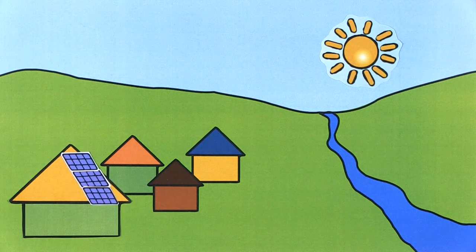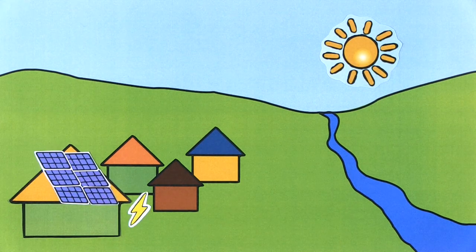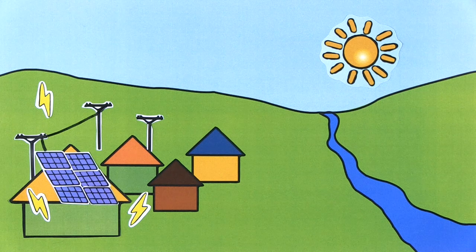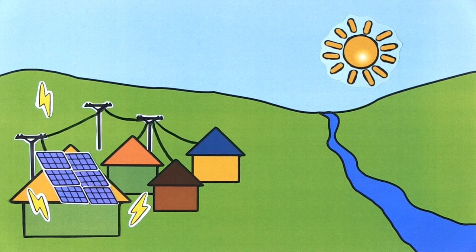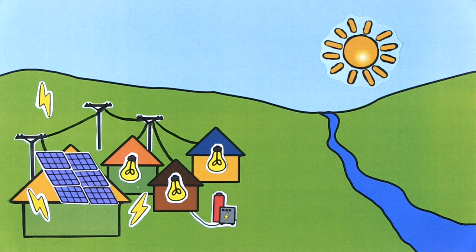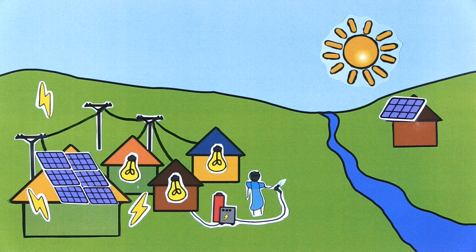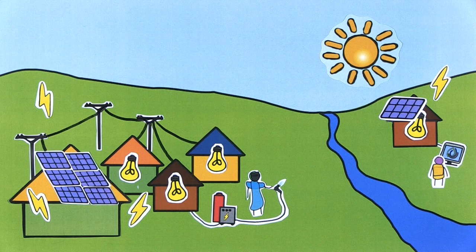Distributed renewable electricity systems can either work off-grid or can be connected to a mini-grid. Mini-grid systems are localised power networks that transmit electricity to the area of demand. They usually use a battery backup. For example, energy supply in a remote town is sometimes even connected to neighbouring towns. Off-grid or stand-alone systems are not connected to any grid — they power households or businesses where all electricity is consumed on-site or very close by.